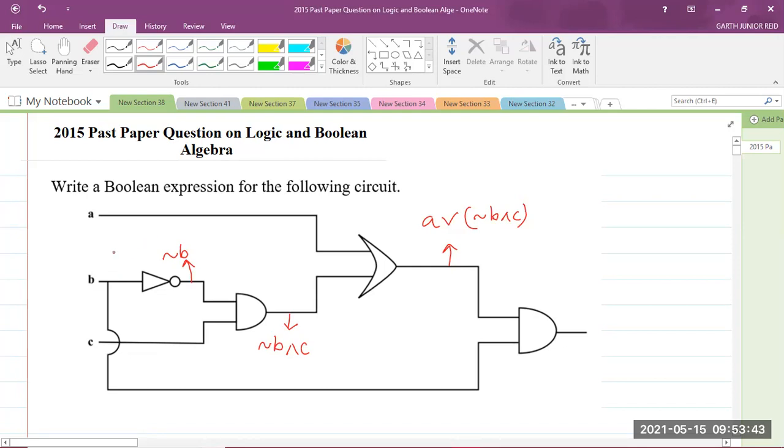Now let's look at B. B goes through this gate here. And also A or NOT B and C also goes through this gate. This is the AND gate.